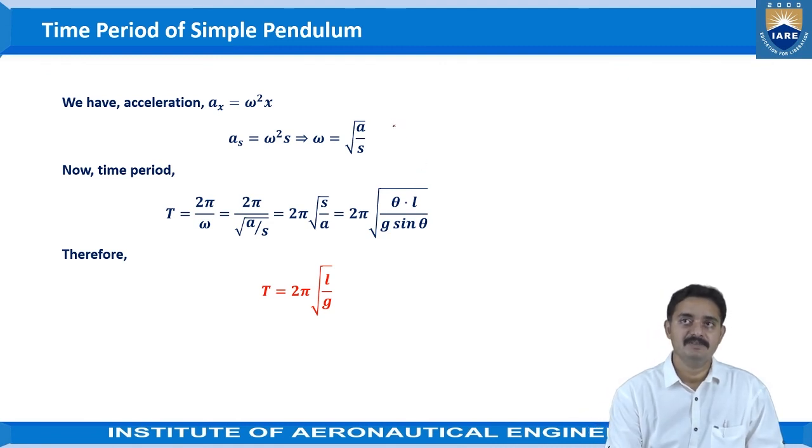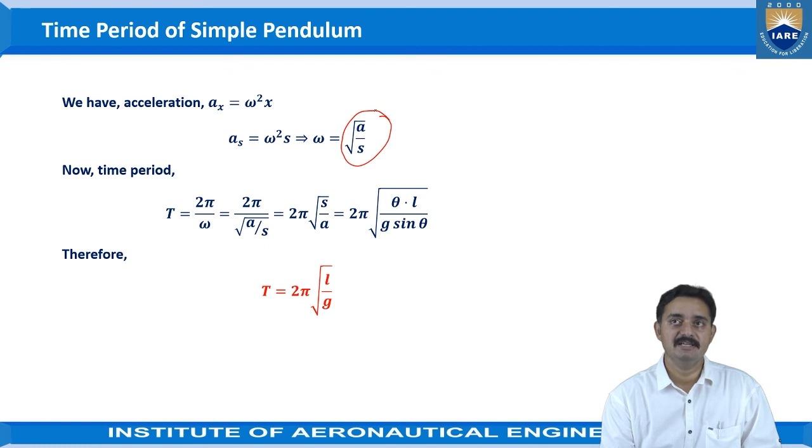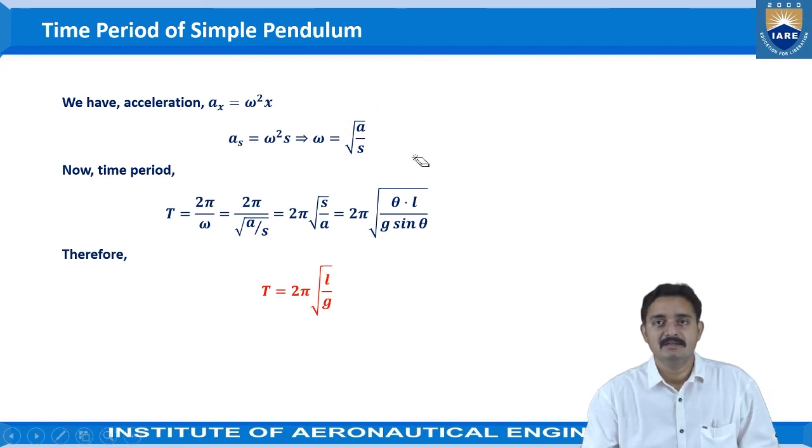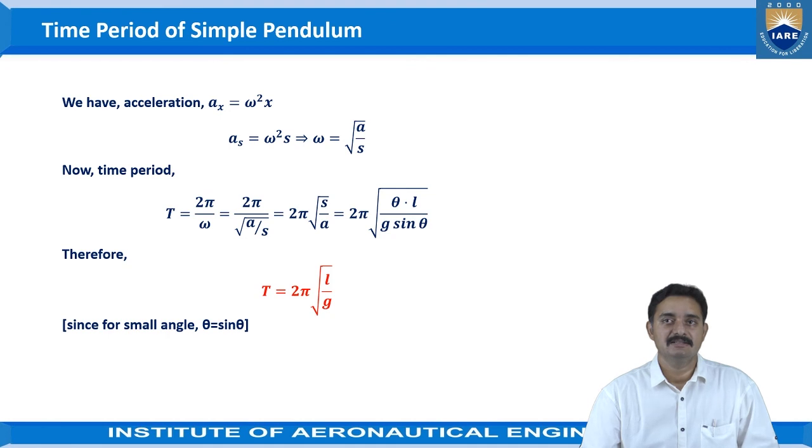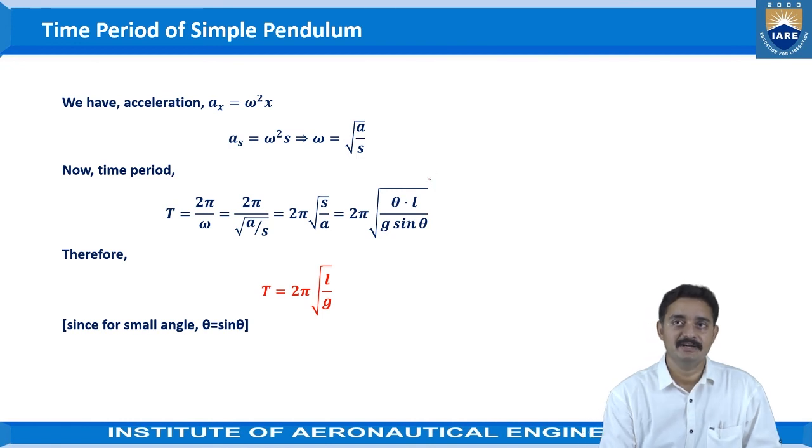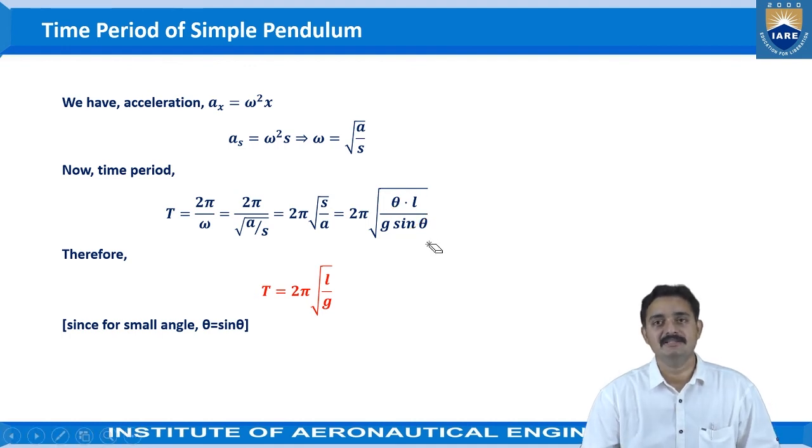We can remember this equation which is the under root of acceleration to displacement ratio for further implementation of the values. Since for small angle, theta is equal to sin theta. Here sin theta has been replaced with theta and the numerator and denominator, the theta gets cancelled as the theta value is very small.